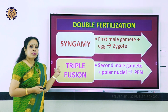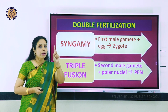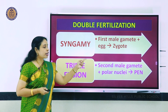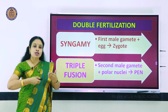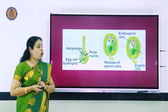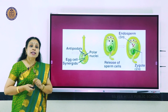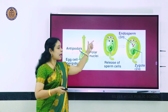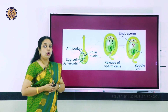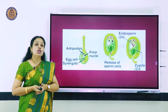The second fusion is triple fusion, where the second male gamete fuses with the two polar nuclei in the central cell. Since one male gamete is fusing with two polar nuclei, the product is triploid (3n) - called the primary endosperm nucleus (PEN), which will later develop into the endosperm, the reserve food material. The pollen grain fell on the stigma, moved through the style to the ovary; the two male gametes were released - one fused with the egg to form the diploid zygote, and the second fused with the polar nuclei to form the triploid endosperm. That is double fertilization.